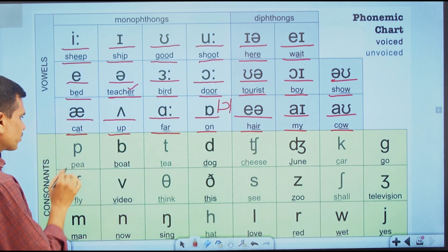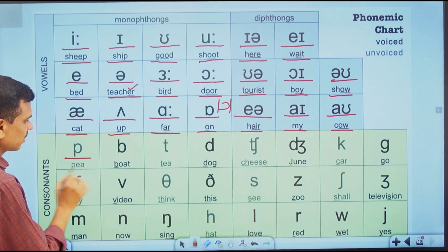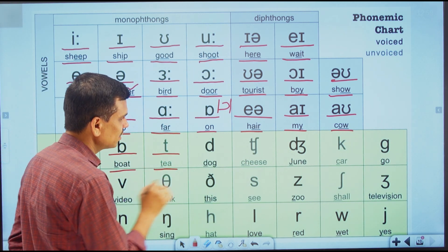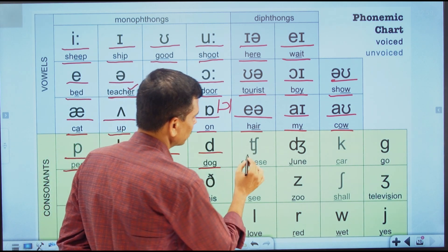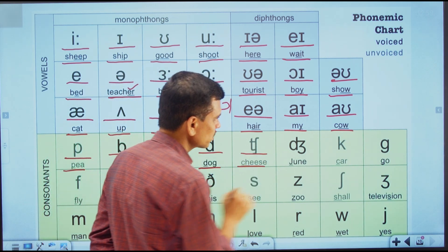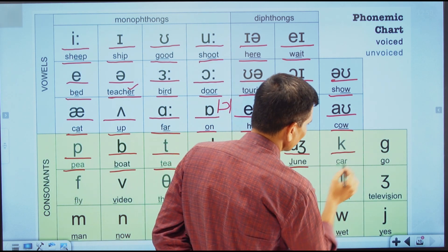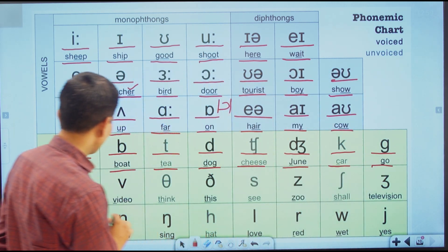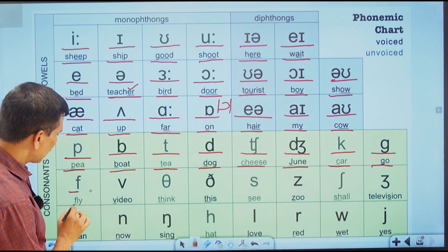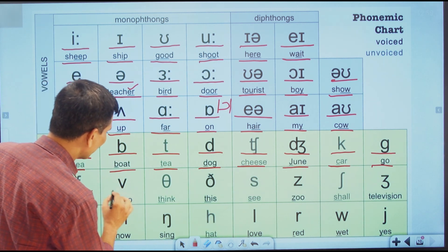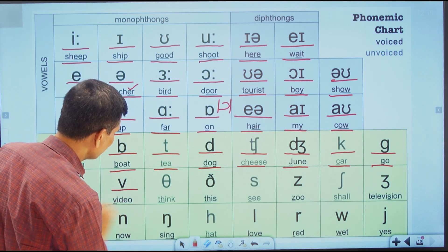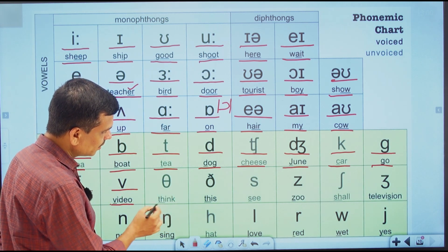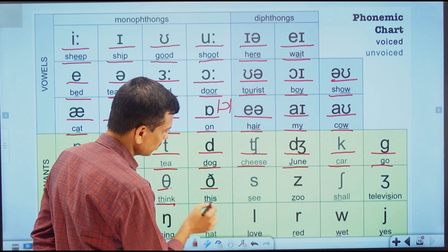Now let's talk about consonants. The first consonant is /p/ as in 'pen', /b/ as in 'boat', /t/ as in 't', /d/ as in 'dog', /tʃ/ as in 'cheese', /dʒ/ as in 'June', /k/ as in 'car', /g/ as in 'go', /f/ as in 'fly', /v/ as in 'video', /θ/ as in 'think', and /ð/ as in 'this'.